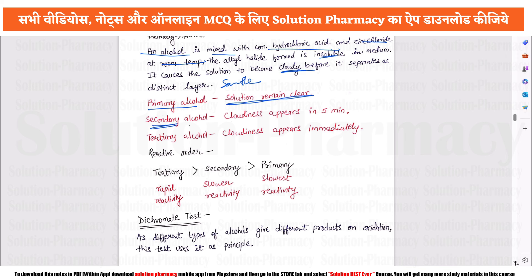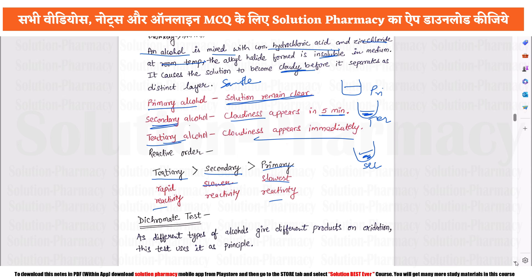With secondary alcohol, cloudiness develops within 5 minutes. If it is tertiary, cloudiness develops immediately when the reaction is performed. In terms of reactivity: tertiary reacts most quickly, secondary reacts at a relatively lower rate, and primary reacts the least — less than one.